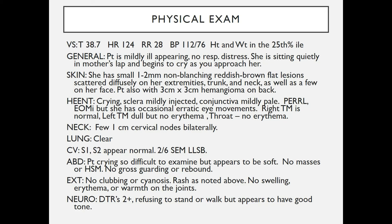Abdomen: the patient is crying, so it is difficult to examine, but it appears soft with no masses or hepatosplenomegaly and no gross guarding or rebound. Extremities: no clubbing or cyanosis; the rash is noted as above; no swelling, erythema, or warmth of the joints. Neuro: deep tendon reflexes are 2+. She is refusing to stand or walk but appears to have good tone.